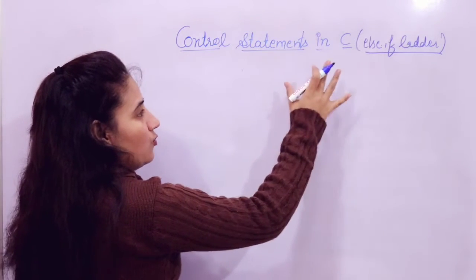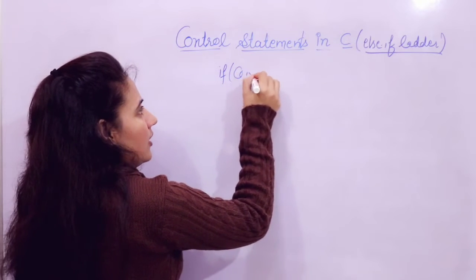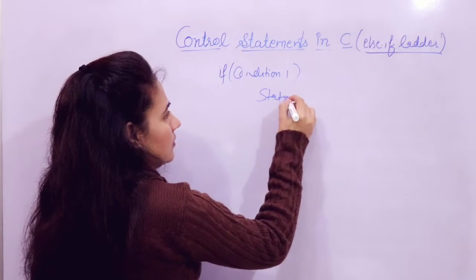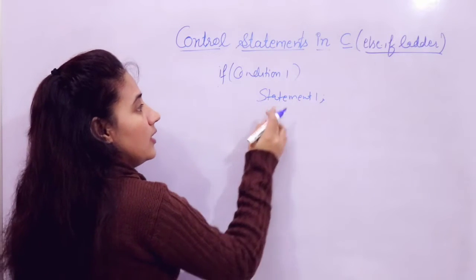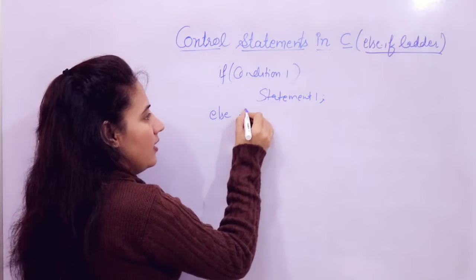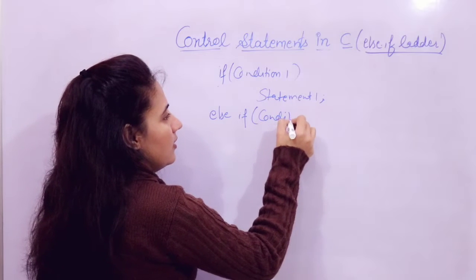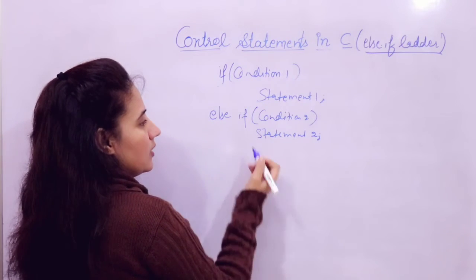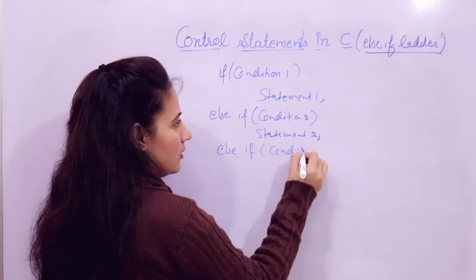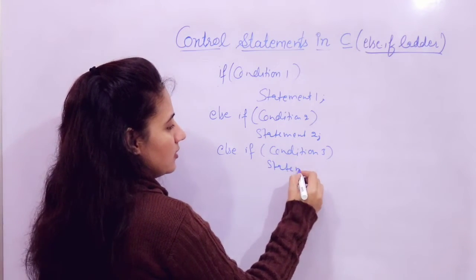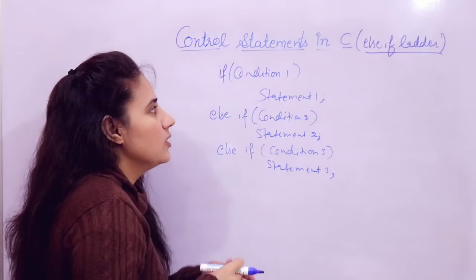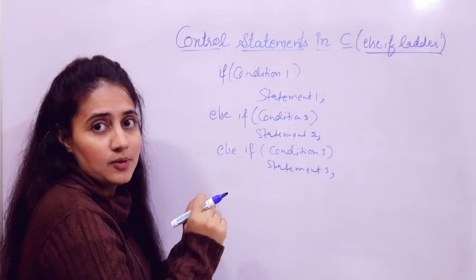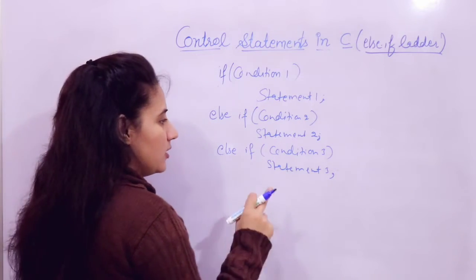Let's see the syntax of the else-if ladder. We write: if condition one is true, then statement one would be executed. After that, else-if with condition two — if this is true, then statement two would be executed. Again, else-if condition three — if this is true, then statement three would be executed. I'm not putting curly braces here because I'm considering only a single statement. If you write a block of statements, then you must write curly braces.